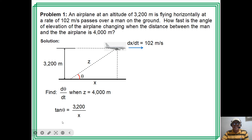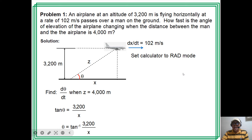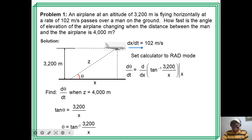We can use the tangent function: tan(θ) = 3200/x, so θ = arctan(3200/x). Then we use the calculator set to radian mode, because it involves arctan. So dθ/dt equals the derivative of arctan(3200/x) in the calculator for a given value of x, then multiplied by dx/dt.